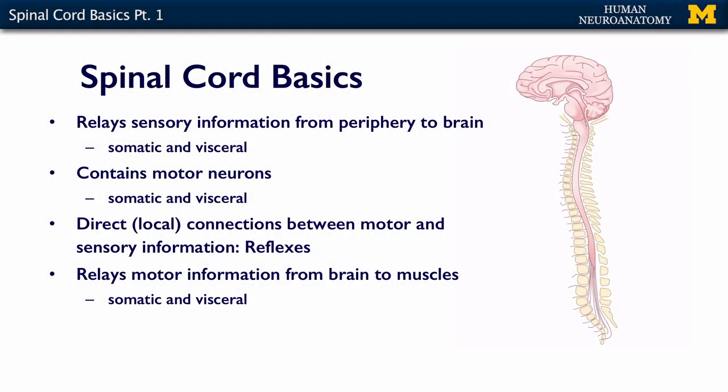The basic stuff about the spinal cord that is really important to know is that the spinal cord relays sensory information from the periphery — that means your surface — to your brain. And that is both somatic sensory information and visceral information, so your surface and your internal organs.